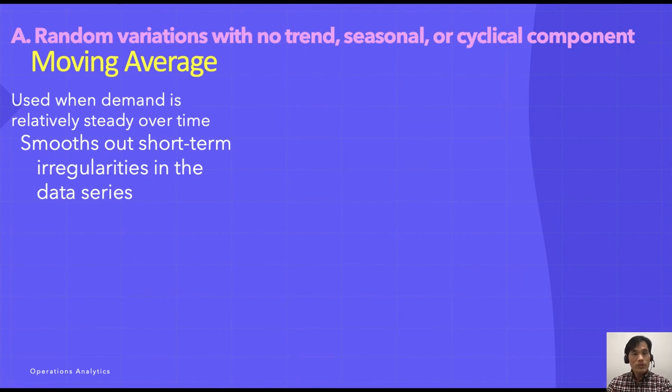We will be covering many methods related to forecasting time series. The first one is moving average. Please pay attention to the first title: random variations with no trend, seasonal, or cyclical component. When we are not assuming a trend or seasonal or cyclical components, there are several methods we can use. The first one is moving average.